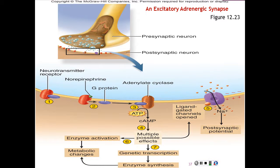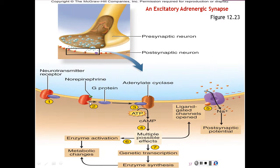The third is the excitatory adrenergic synapse, which employs norepinephrine as a neurotransmitter. Its receptor is not an ion gate but a transmembrane protein associated with a G-protein in a second messenger system. The binding of norepinephrine to the receptor causes the G-protein to dissociate from it and be released.